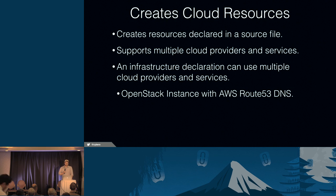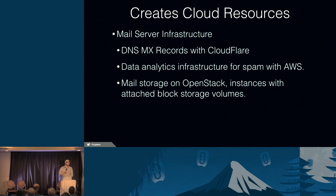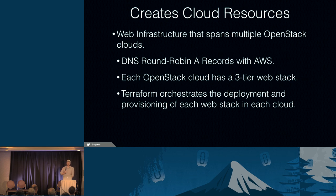Terraform allows you to create cloud resources. You declare those resources in a source file. Terraform supports multiple cloud providers and services, and your infrastructure declaration can use those multiple providers. So you don't have to work on one cloud exclusively. For example, you can have an OpenStack instance that registers DNS records with Amazon Route 53. As a full deployment example, you can register DNS MX records with CloudFlare, have a data analytics system on AWS for spam filtering, and have the actual mail storage on OpenStack with instances attached to block storage volumes.